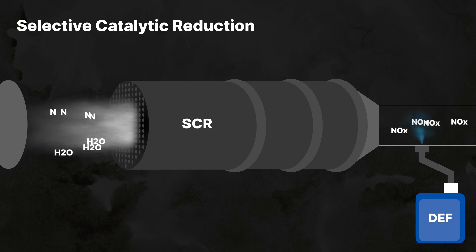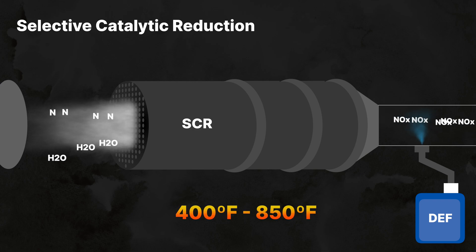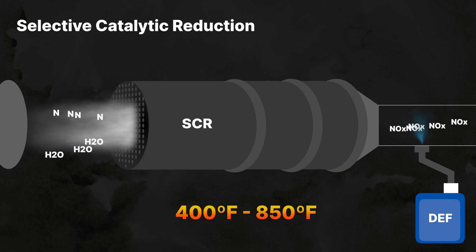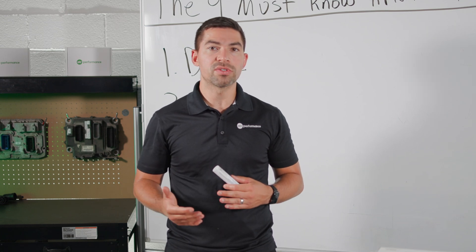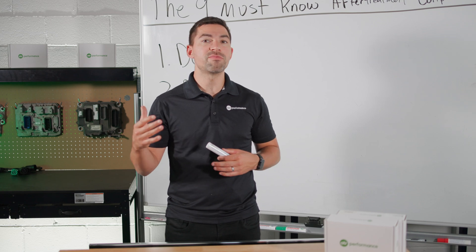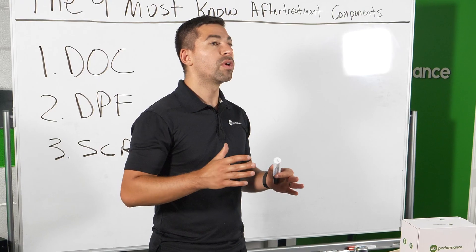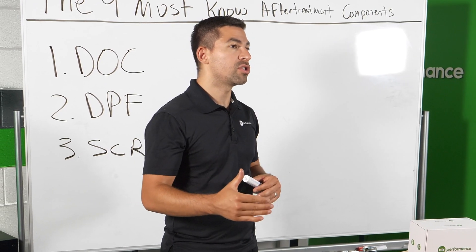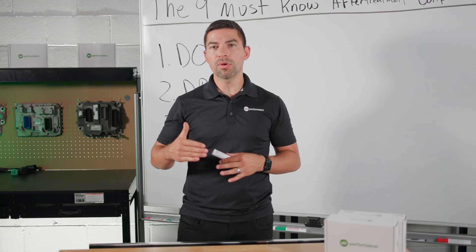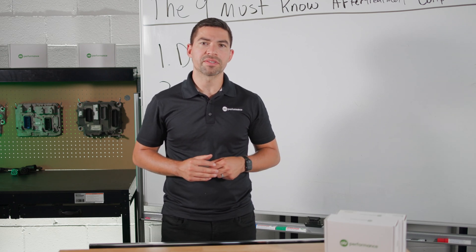Optimal SCR performance requires exhaust temperatures between 400 degrees and 850 degrees. DEF quality and dosing rates are critical — poor DEF fluid could lead to crystallization and system blockages. SCR issues could cause engine derates and potentially put you in a five mile-per-hour DEF derate, so it's important to understand what component plays a key role in your complete after-treatment system.